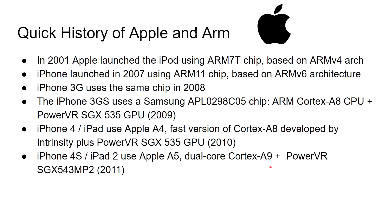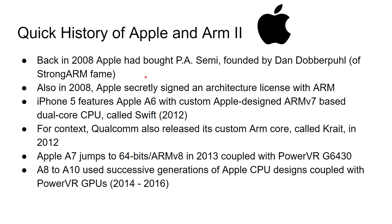Back in 2008, Apple had bought PA Semi, founded by — there you go — Dan Dobberpoul. So the same guy who did the StrongARM back at DEC now had another company called PA Semi, which he founded, and that was bought by Apple, bringing over all the engineers including Dan to work on SoC development. And in 2008, Apple secretly signed an architectural license with ARM so that it could design its own ARM-compatible CPUs — clean room, clean piece of paper, designed from the bottom up, but 100% compatible.